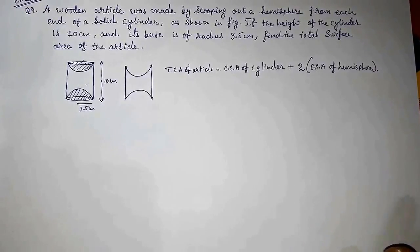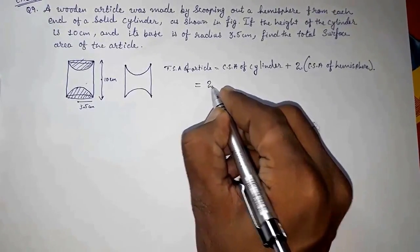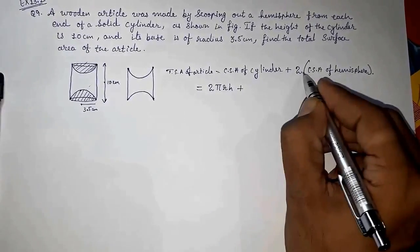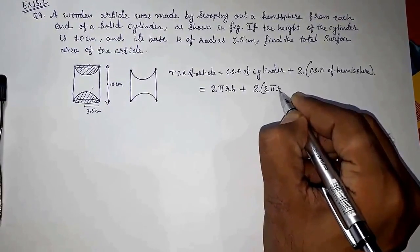Now we are going to use the formula. CSA of cylinder is 2πrh, and CSA of hemisphere is 2πr².